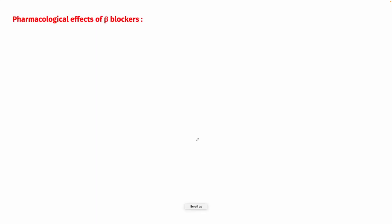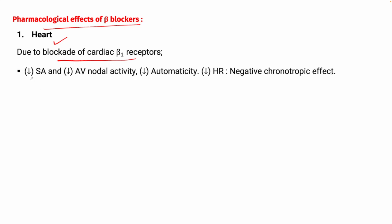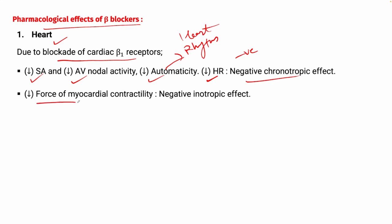Now let's begin the pharmacological effects of beta blockers. First, we will see the effect on the heart. Beta blockers block the cardiac beta-1 receptor, leading to a decrease in SA node activity, a decrease in automaticity, and a decrease in heart rate — this is a negative chronotropic effect. There will also be a decrease in force of myocardial contractility, which is a negative inotropic effect.